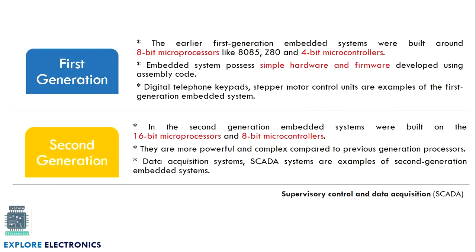In first generation embedded systems, we generally have 8-bit microprocessors — the processor inside would be an 8085 or Z80. There is also a 4-bit microcontroller. These embedded systems possess simple hardware and very simple software. Examples include digital telephone keypads and stepper motor control units.